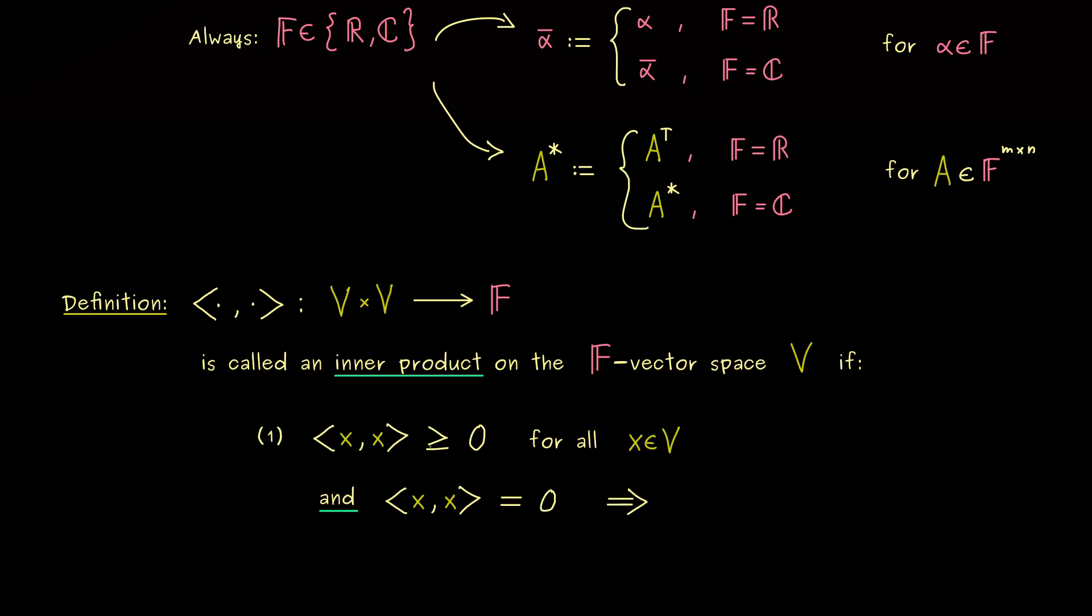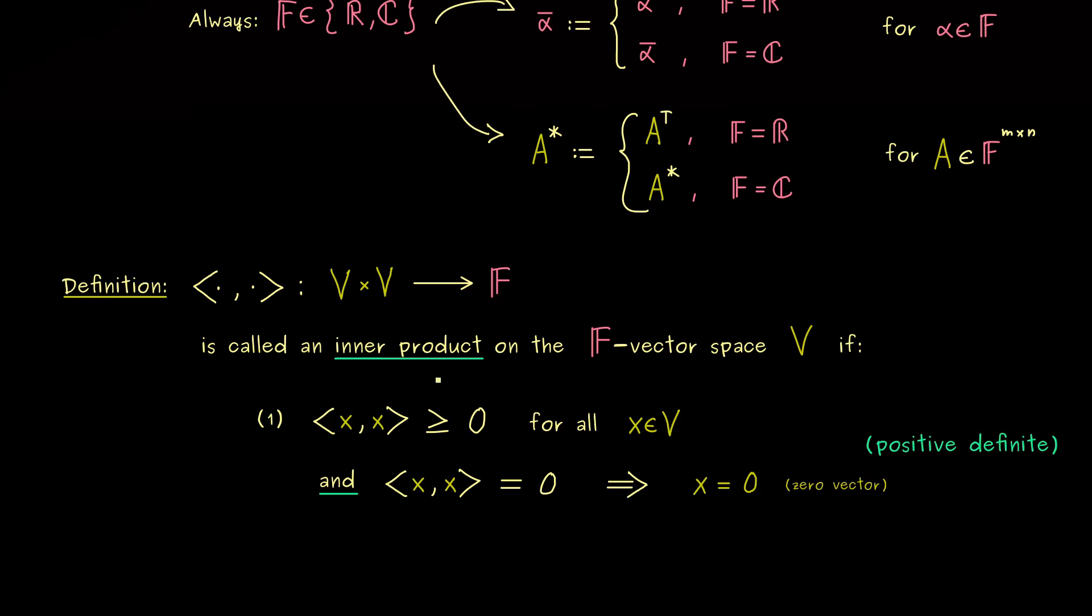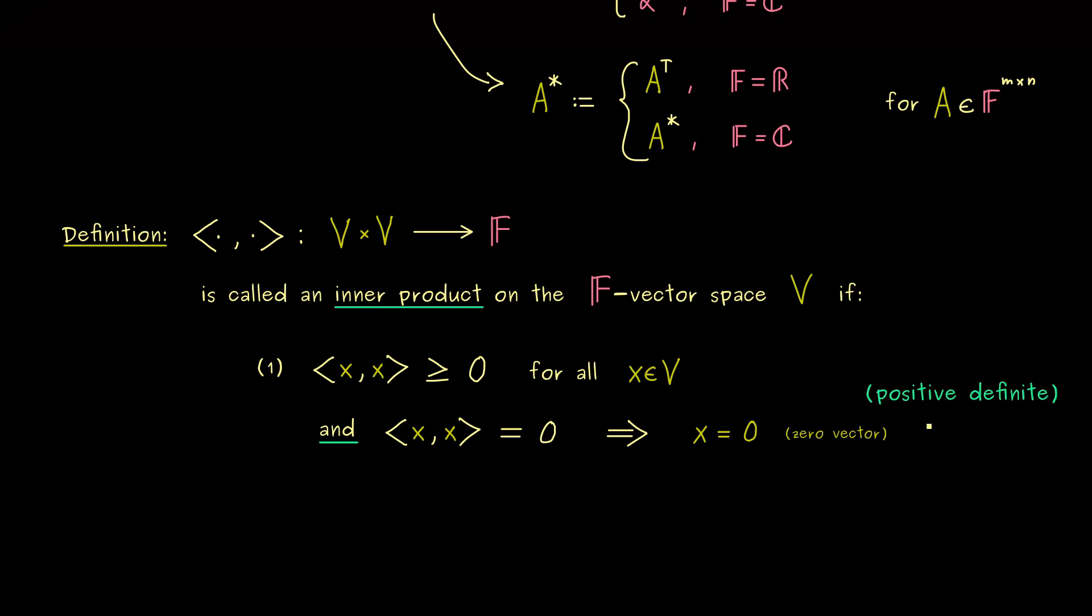Hence the only case that the length can be zero is for the zero vector. So we also claim this implication, if the inner product like this is zero, we get that x is equal to zero. And as always please note, here we have the real number zero and here we have the zero vector in V. Now, this is the first property of the inner product and you can remember that as the inner product is positive definite. And indeed it means both claims here together.